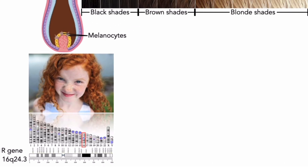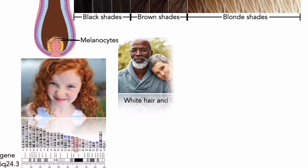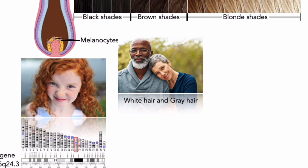As pigment production decreases with age, hair color lightens. White hair results from both a lack of pigment and the presence of air bubbles within the hair shaft. As the proportion of white hairs increases, the individual's hair color is defined as gray. Because each hair is dead and inert, changes in color are gradual.